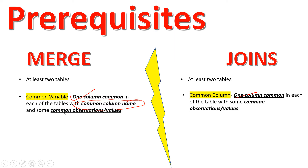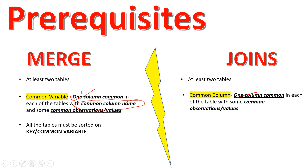The next part of the second prerequisite is common observations or values — there must be some observations common in the common column in both of the two tables. Additionally, when you try to merge, all tables must be sorted on the key or common variable. Both tables should be sorted based on that column. If you have not seen the video on how to sort data, check out that using the link at the upper right corner.